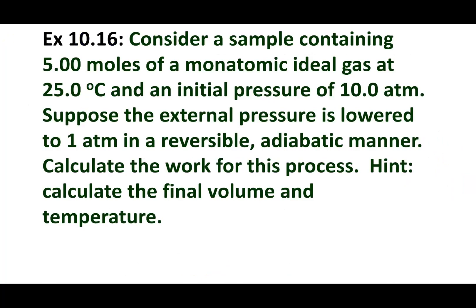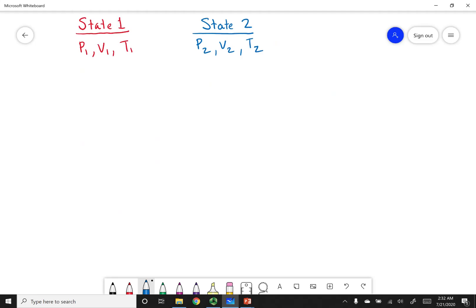I want you to go ahead and look at example 10.16. Once you run through this problem, go ahead and mark the right answer. All right, general people, what I want you guys to remember is that in an adiabatic process going from state one to state two, pressure, volume, and temperature are all changing.